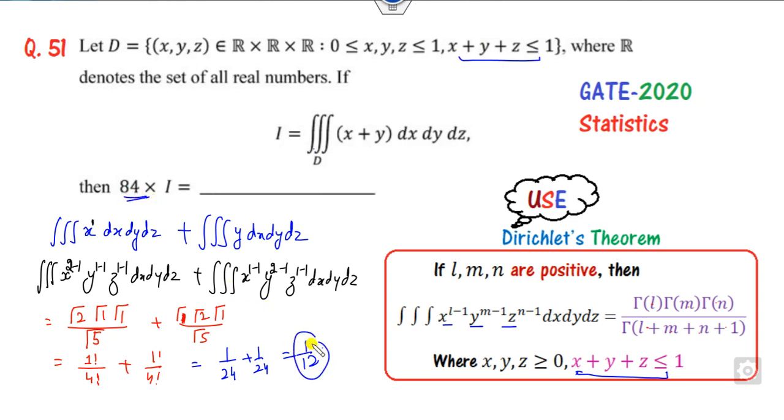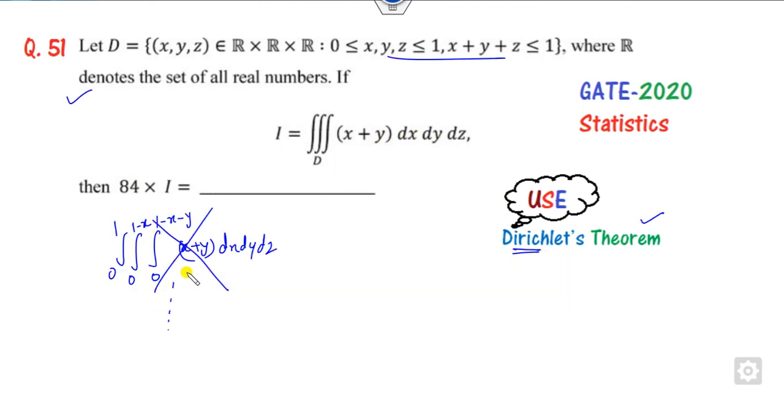So if you multiply this by 84, what is the required answer? 7 is the required answer. So you can see that with the help of Dirichlet's theorem you can simplify this integration in a very simple manner instead of solving this in a time-consuming step.